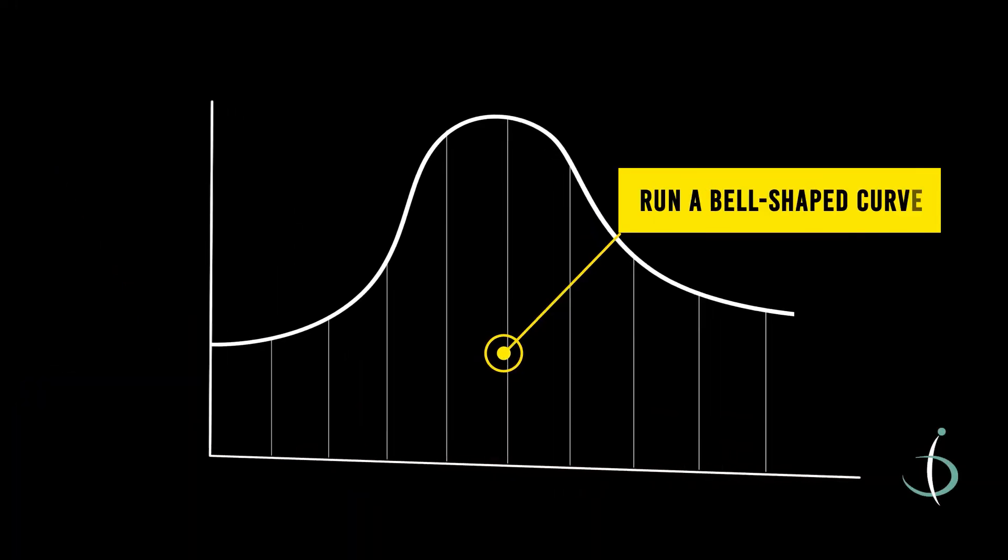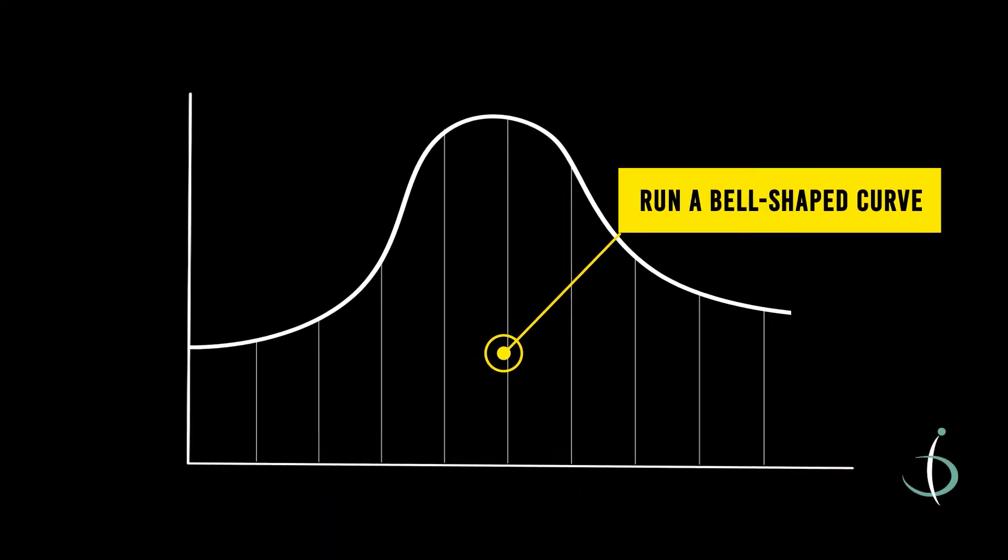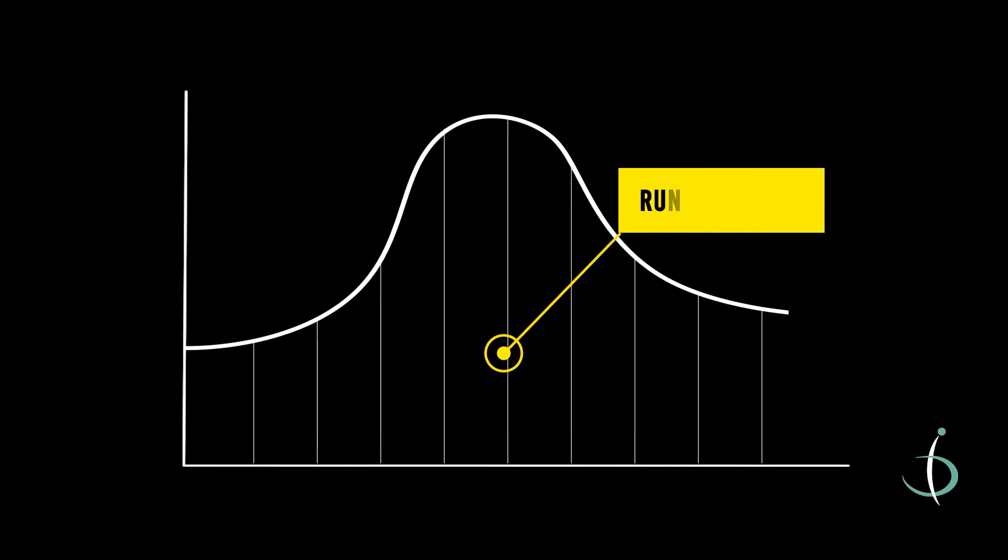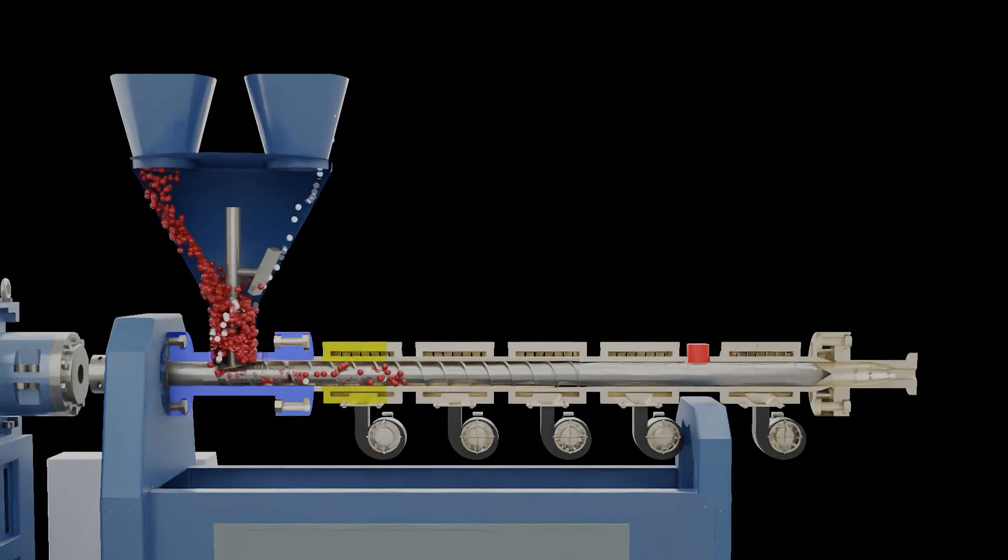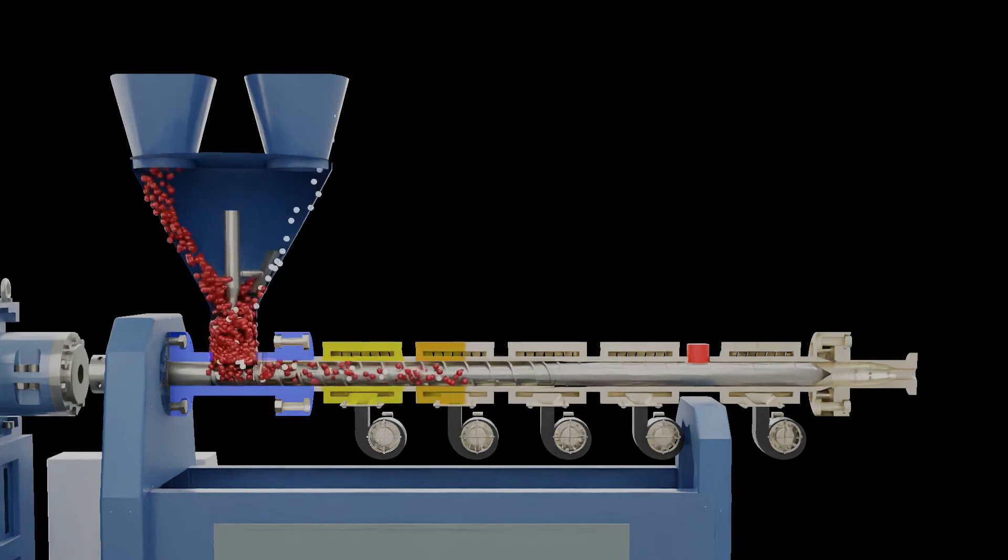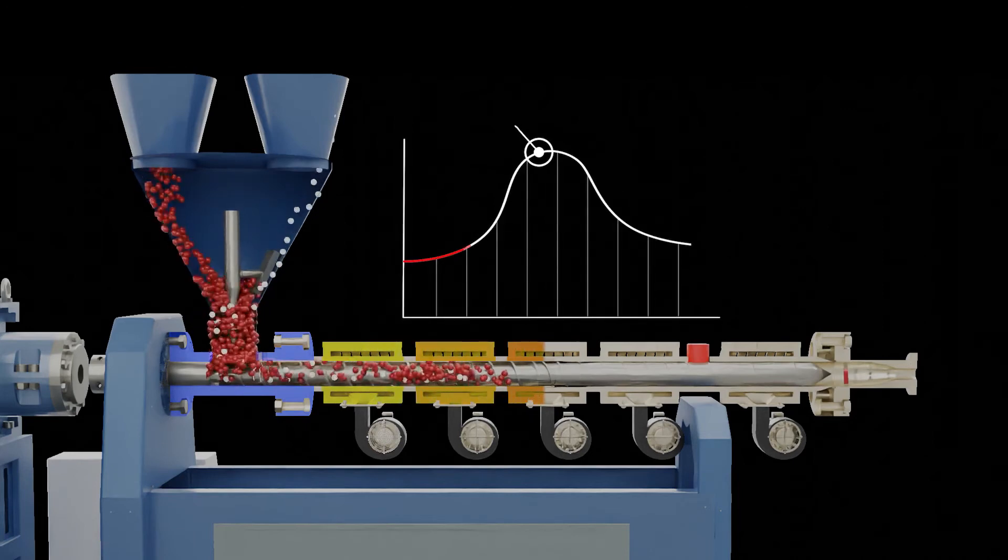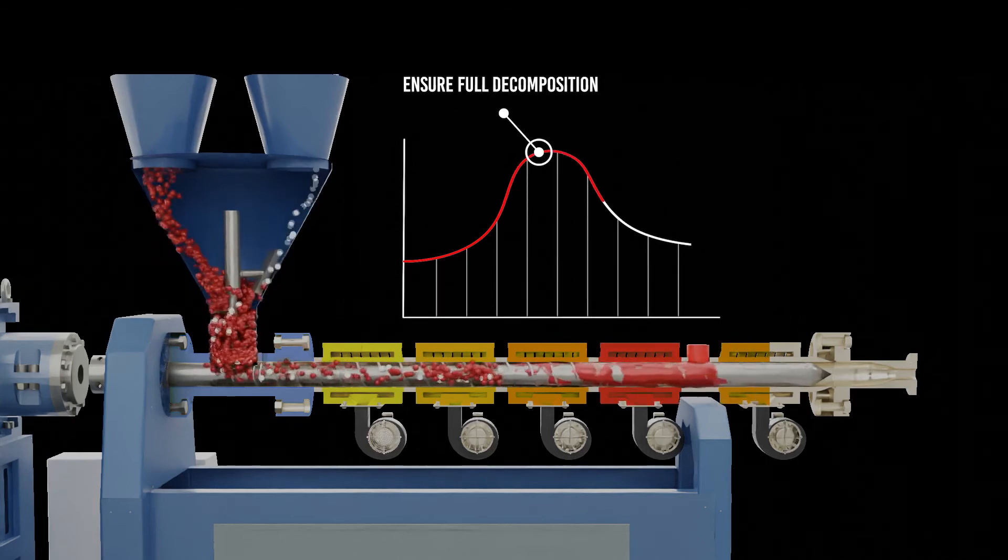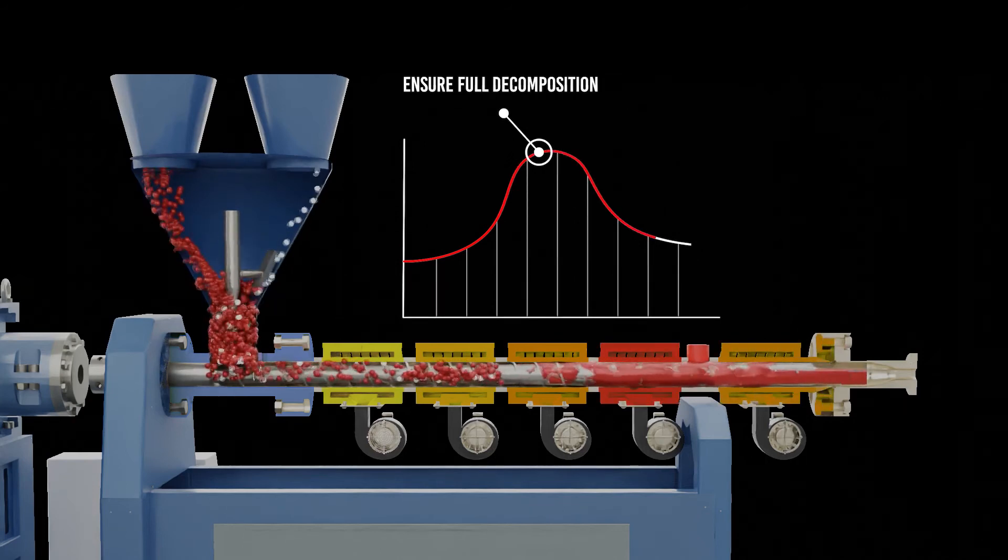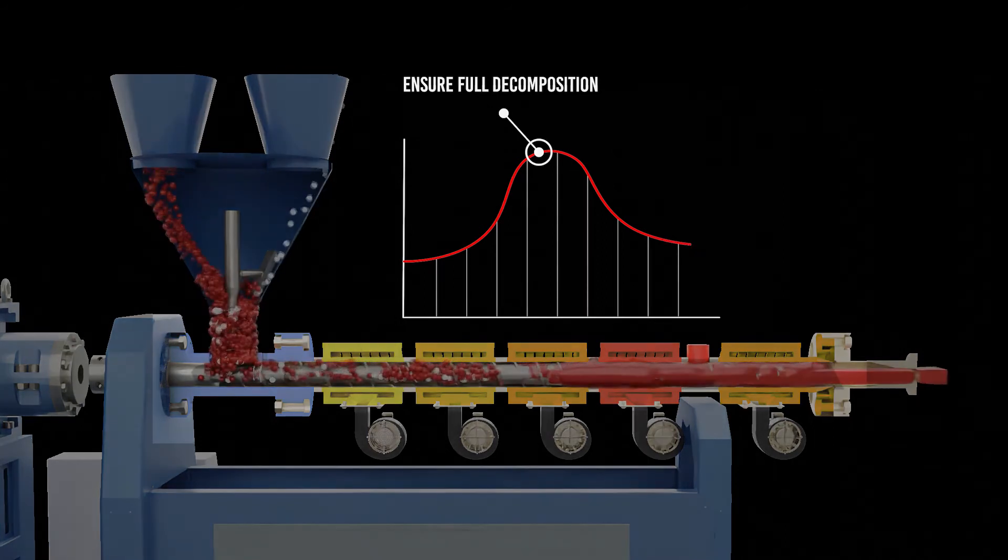We recommend that you run a bell-shaped curve on the temperature profile. We do this for several reasons. First, we want to ensure full decomposition of the CFA. Secondly, we want to start to cool the barrels just before the die to help improve the melt strength of the resin. This helps control the foaming process and is critical when foaming resins such as polypropylene and nylon.